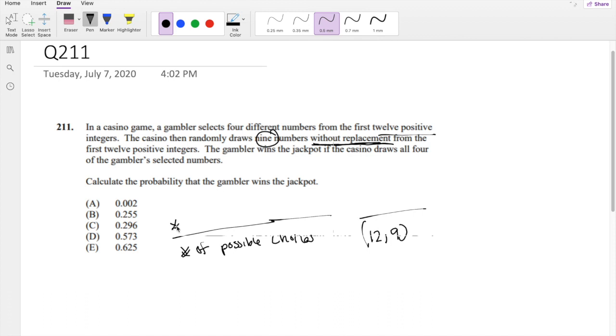So the numerator is going to be the number of samples that results in 4 wins, or 4 cards that they pick - 4 winner cards. And if there is already 4 and we're picking 9, there's 5 loser cards, loser numbers. So that's basically what we're looking for here.